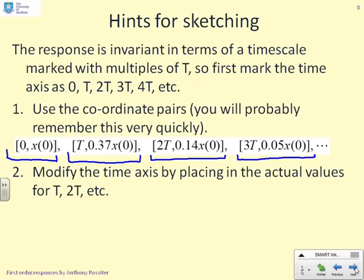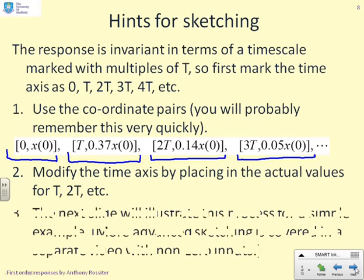We modify the axis next by placing the actual values of time. So we basically cross out capital T and put the numeric value that we should have there. We'll show this in an example on the next slide.